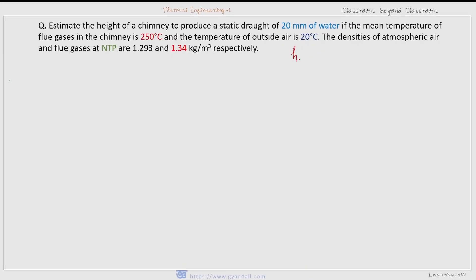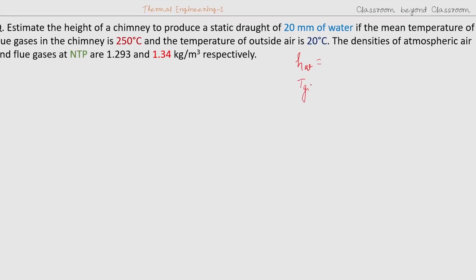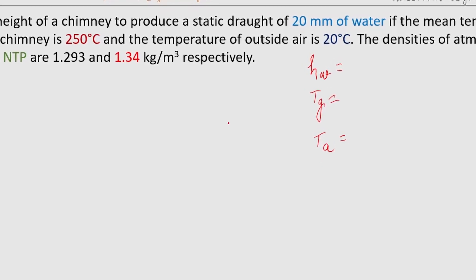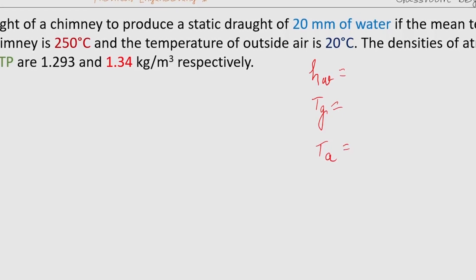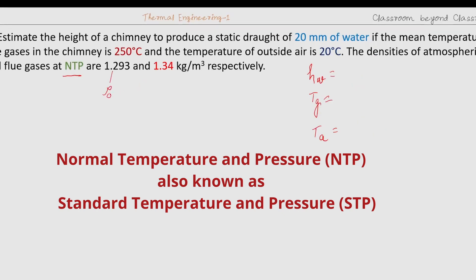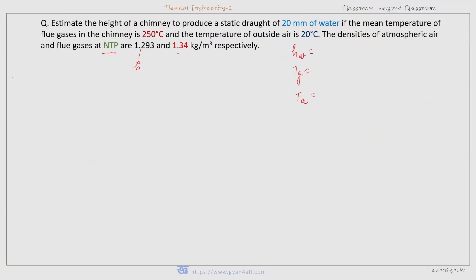According to the problem: static draft W_H equals 20 mm of water; temperature of the flue gases T_G equals 250°C; temperature of atmospheric air T_A equals 20°C. The density of atmospheric air at NTP — normal temperature (0°C) and pressure (1 atm) — is 1.293 kg/m³, and the density of flue gases at NTP is 1.34 kg/m³.